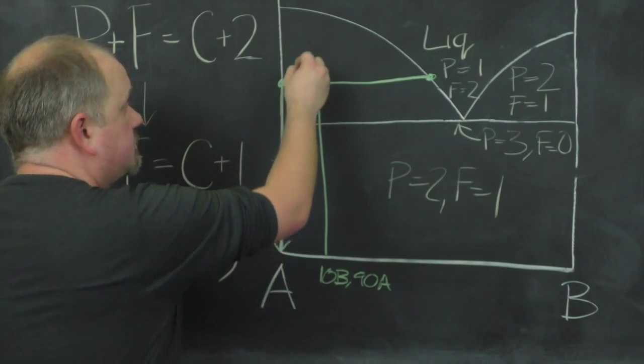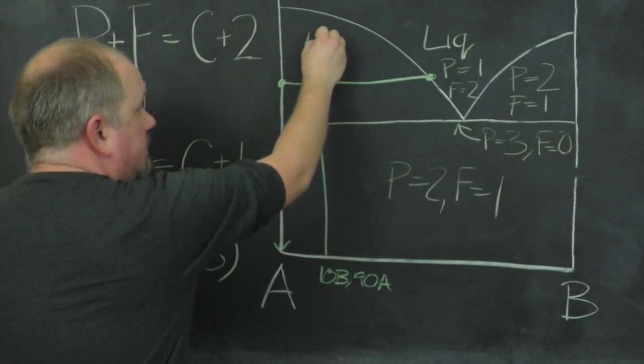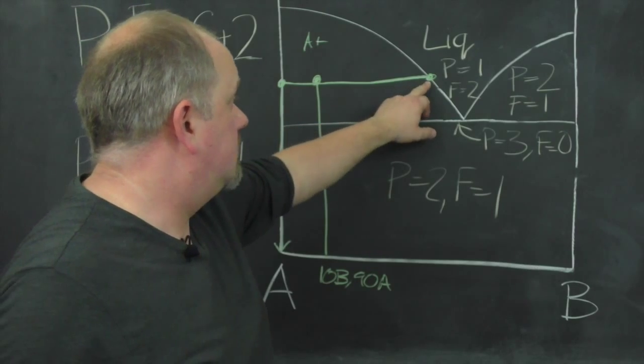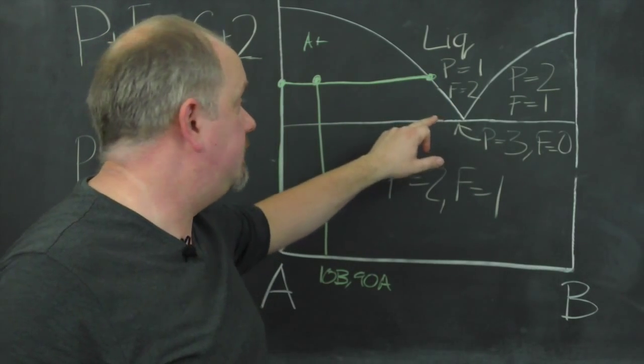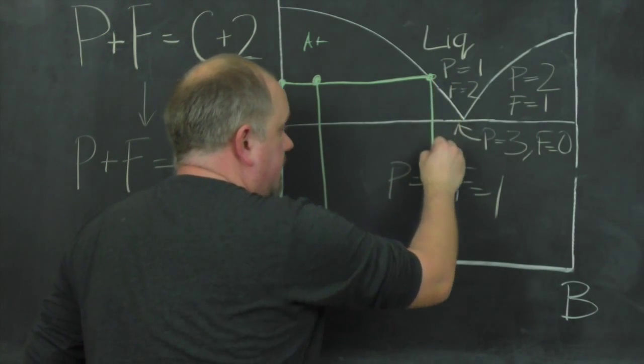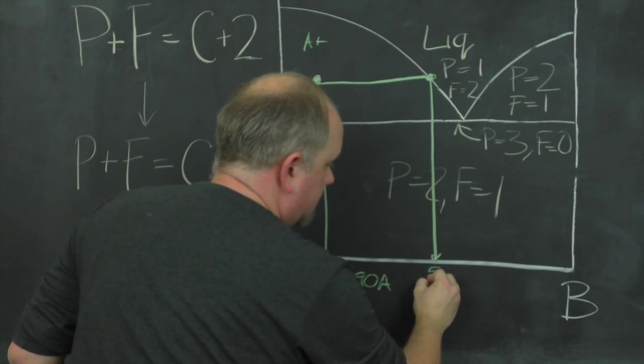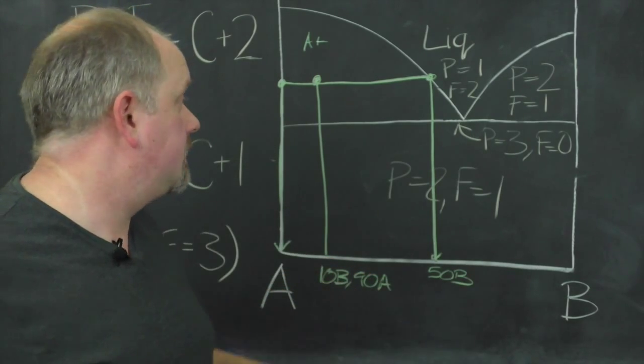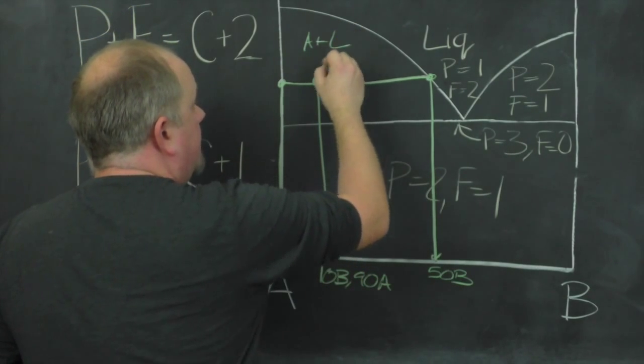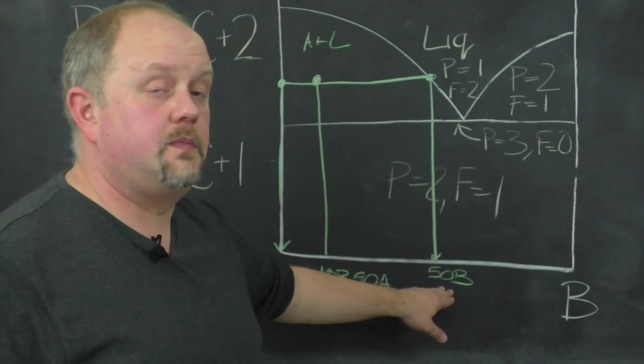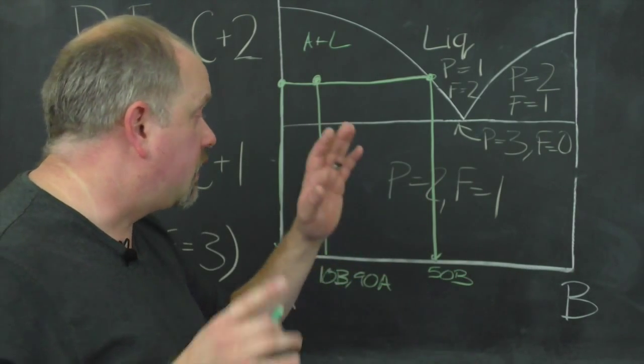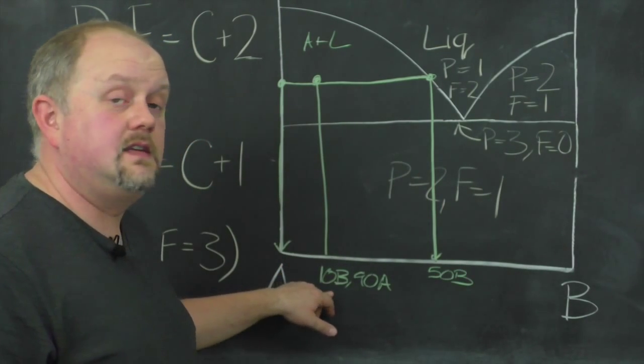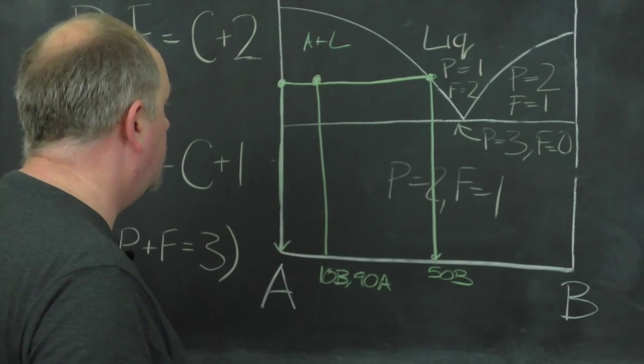So in this region, we have A plus we've hit liquid here. So we have liquid. And if we draw on our isopleth here, we can see that the liquid composition is about 50B. Okay. So A plus liquid in there with the liquid composition 50B. But the overall composition for the system is 10B.